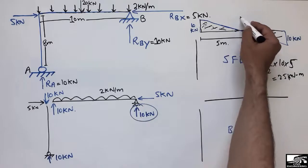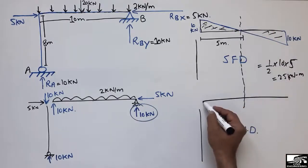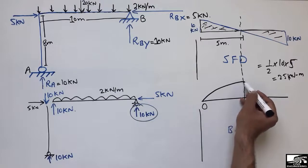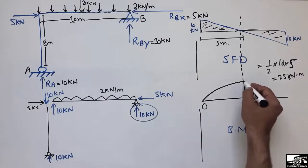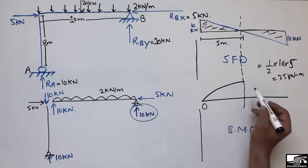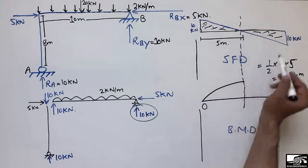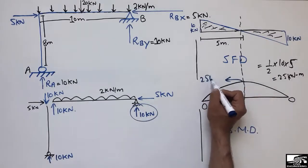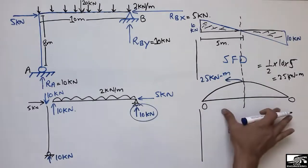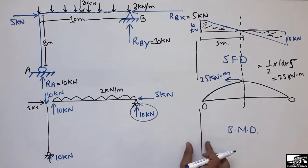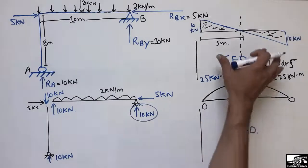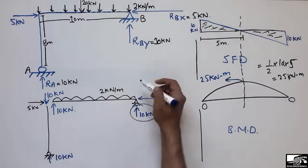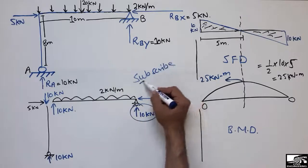Where the shear force is zero, the bending moment is maximum. There is zero bending moment at the ends because there is no fixed support to resist moment — the roller and hinge supports cannot take moment. The maximum bending moment acts at the midpoint of the beam and equals 25 kNm, then returns to zero at the hinge end. This is the bending moment diagram for the frame. Hope you guys understand — don't forget to subscribe to the channel. Thank you for watching.